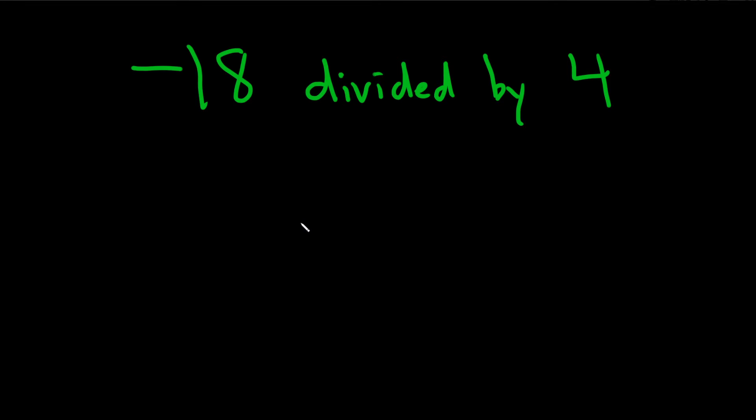We have negative 18 divided by 4, and the question wants us to use the division algorithm to find the quotient and the remainder.